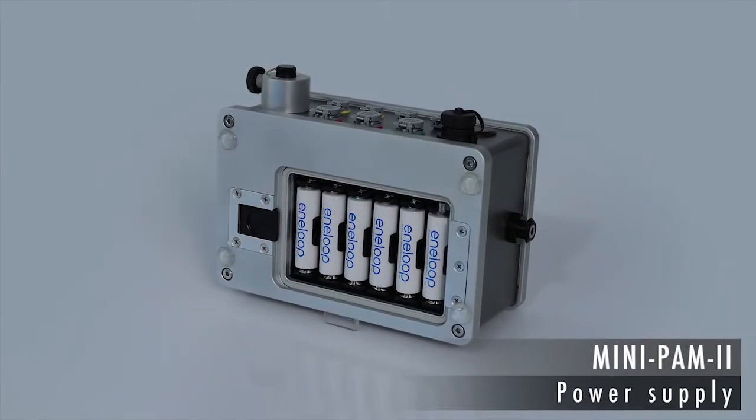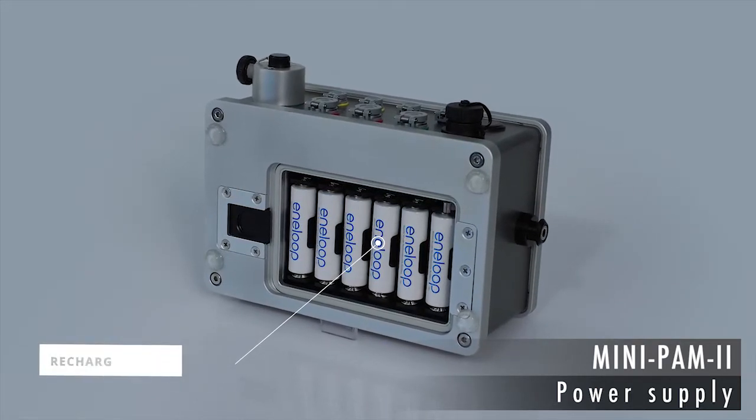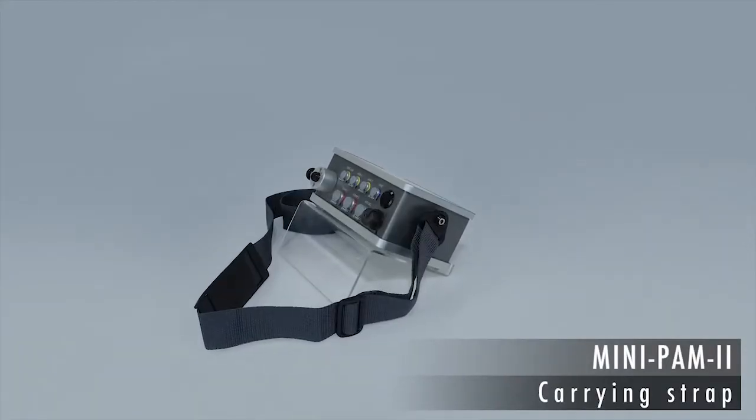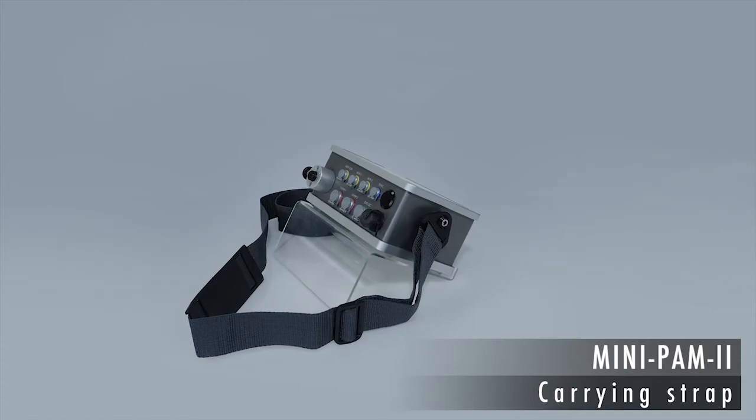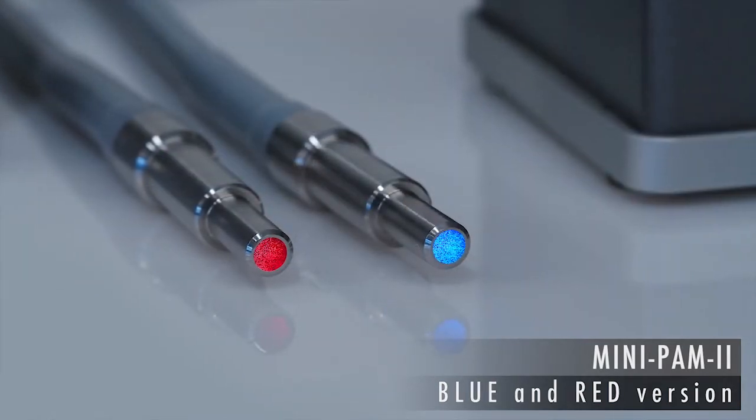The MINI-PAM2 can be powered by widely available type AA rechargeable batteries. The carrying strap greatly enhances the portability and keeps the hands free for manipulations. The MINI-PAM2 is available with a blue or red measuring light.